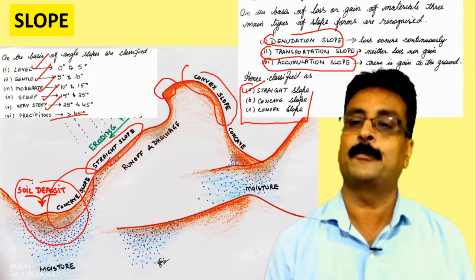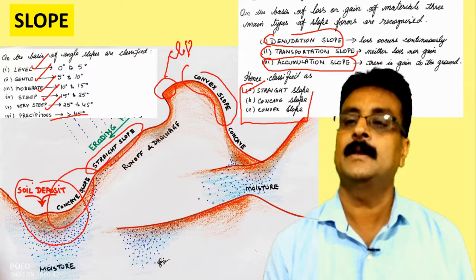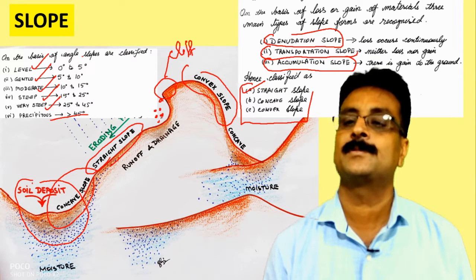We also have a cliff type, where there will always be falling of soil — we call this topples.